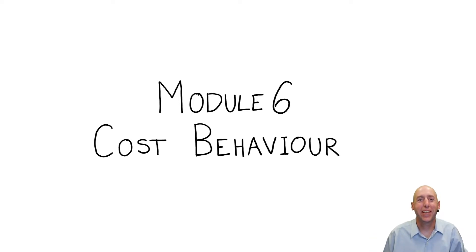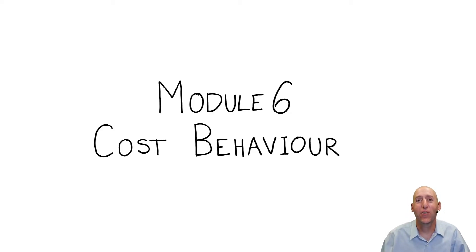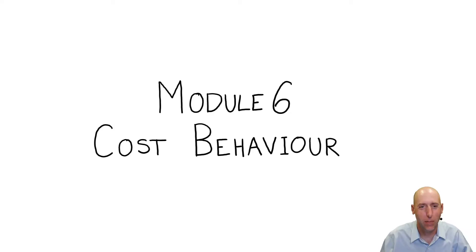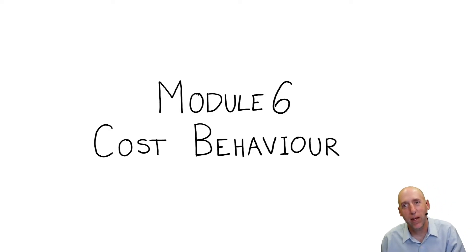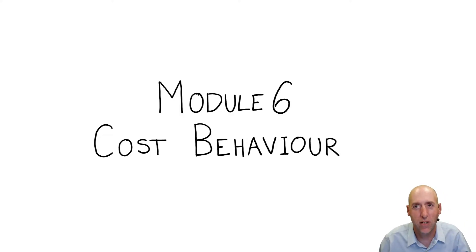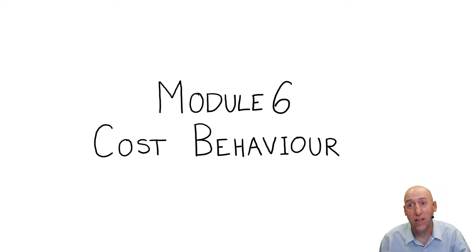Welcome to module six. Ladies and gentlemen, we have made it. This is our first module that isn't about figuring out what our stuff costs. This is the first module since module two that I haven't talked about material, labor, and overhead. This is a transition module to get us into using accounting information to help us make decisions. The first bunch of modules are about using accounting information to figure out how much our stuff costs. Now we're going to learn about decision making.